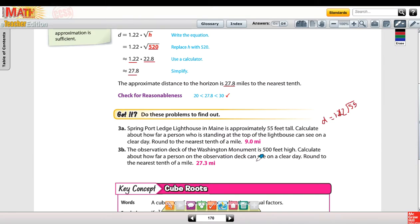Doing the same thing with the observation deck of the Washington Monument on 3b. It's 500 feet high. Calculate how far a person on the observation deck can see on a clear day, round to the nearest tenth of a mile. So you're still using that same formula, just substituting in 500 for your square root there.